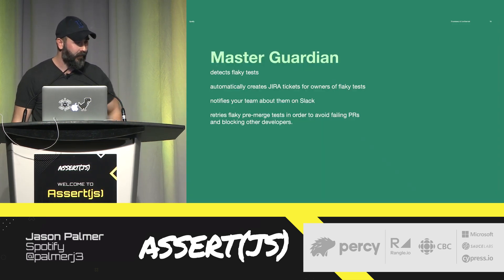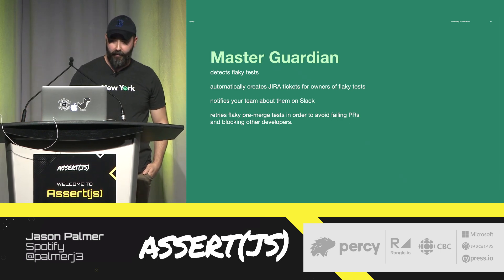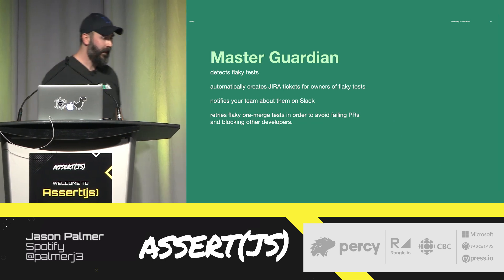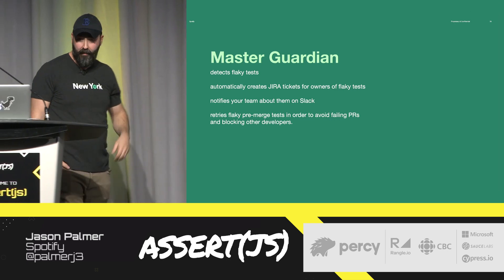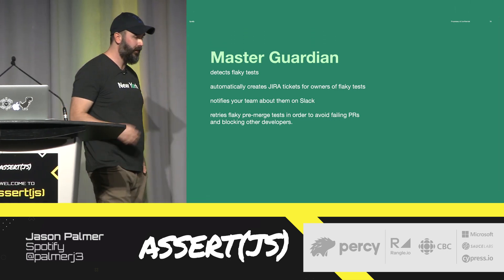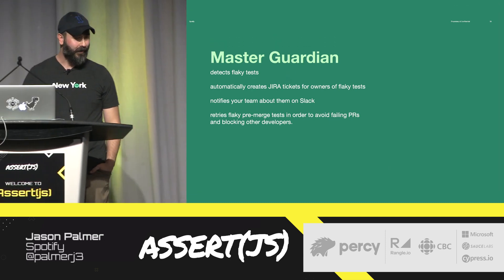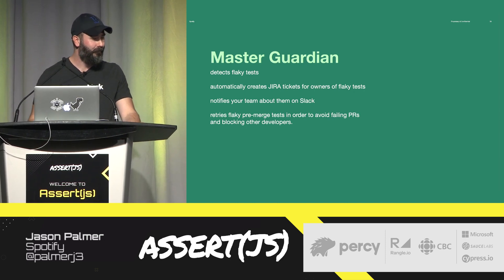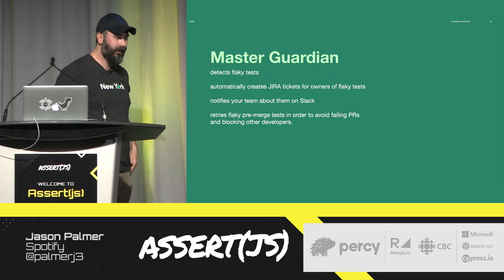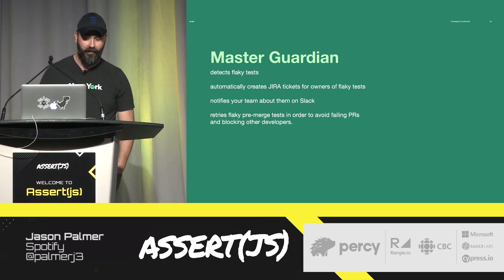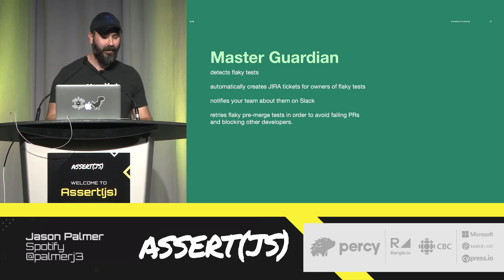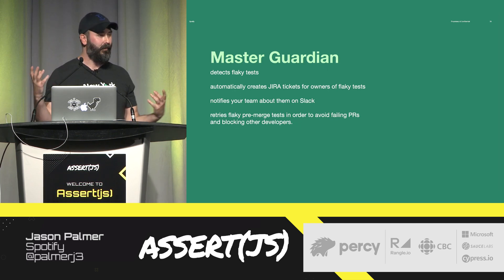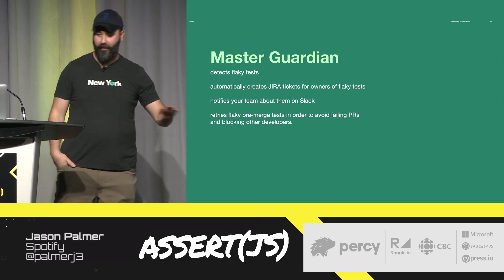The final system we have in place is called MasterGuardian — a relatively new, entirely automated workflow. It uses the same dataset we talked about to detect flaky tests, then automatically creates JIRA tickets for the owners of those flaky tests notifying them, and sends them a Slack message as a further notification. It will try to retry tests pre-merge, but basically it will ignore flaky tests pre-merge. There are certain tests you're simply not allowed to ignore even if they're flaky. But if you have hundreds of developers working on any given system, it's a good idea to push flaky tests off to the side — they are not useful.